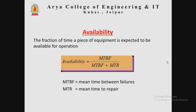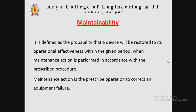Availability is the fraction of time a piece of equipment is expected to be available for operation. Mathematically, availability equals MTBF divided by (MTBF plus MTTR), where MTBF is Mean Time Between Failures and MTTR is Mean Time to Repair.